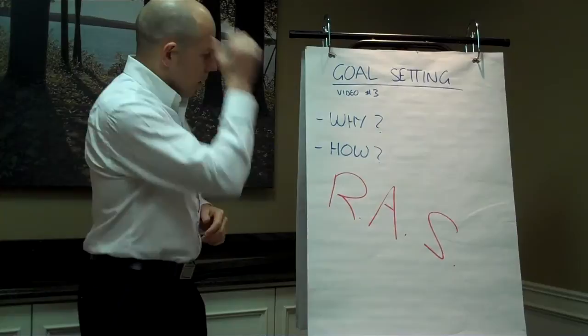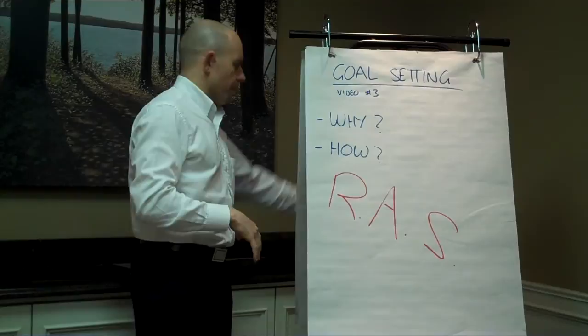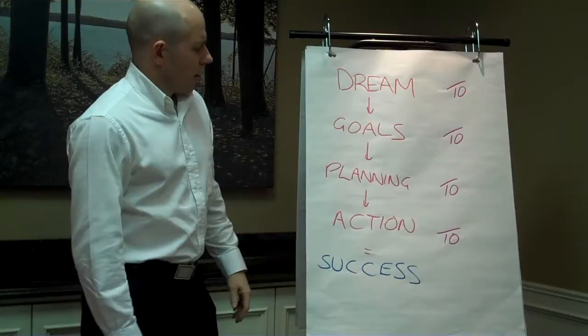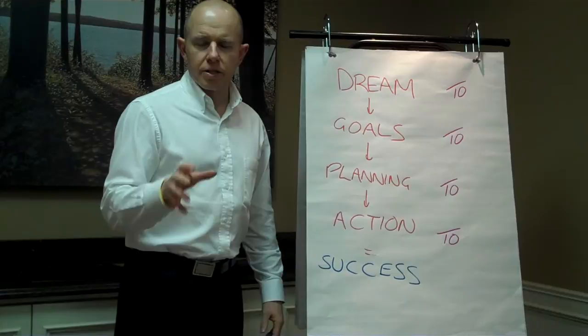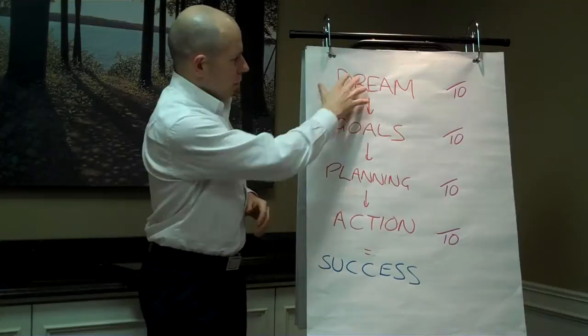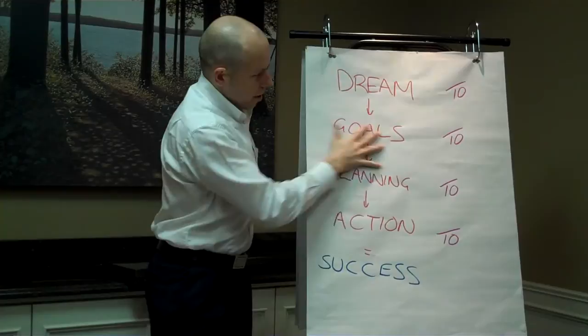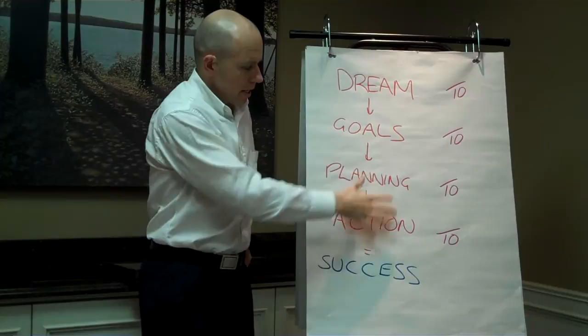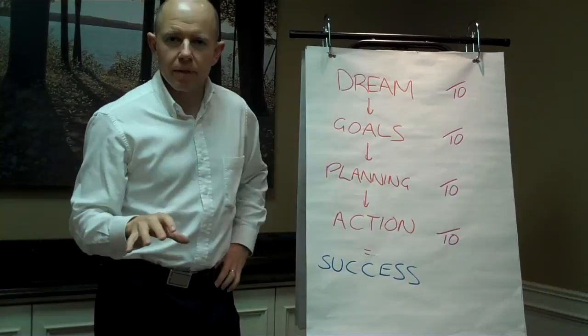So now the how. Before we get into the details, I'm just going to show you a quick tool. To achieve your goals or achieve success — whatever that means for you — there are four key components. Number one is the dream: the big thought, the pie in the sky if you like, the ideal life or the ideal business. From that you translate into more tangible goals. Then there's planning and execution — implementing the goal to achieve success.